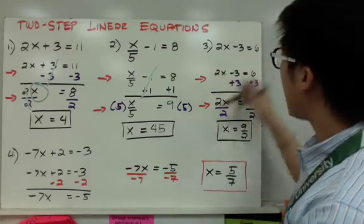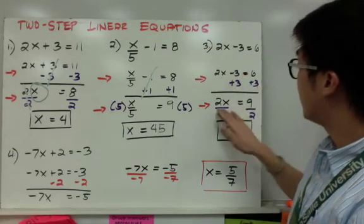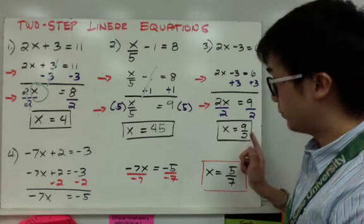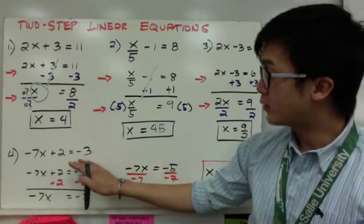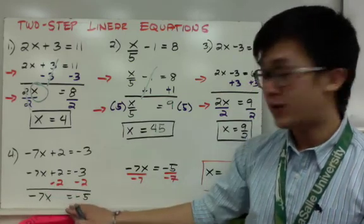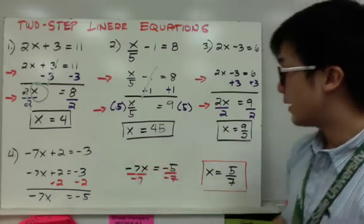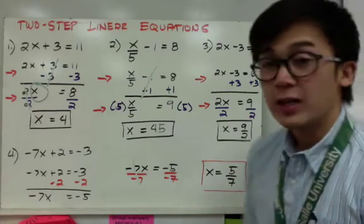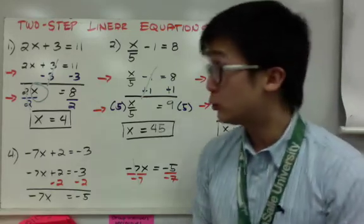For example 3, 2x minus 3 equals 6: add 3 to both sides, giving 2x equals 9, then divide by 2, so x equals 9 over 2. For example 4, negative 7x plus 2 equals negative 3: subtract 2 from both sides to get negative 7x equals negative 5, then divide both sides by negative 7, giving x equals positive 5 over 7. That's how we solve linear equations using one-step and two-step methods.